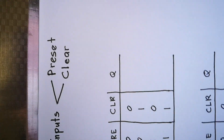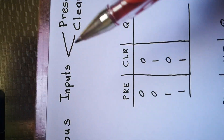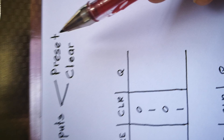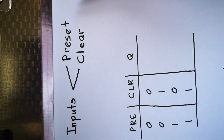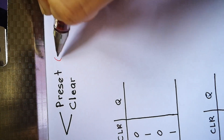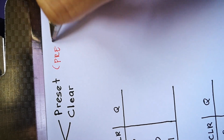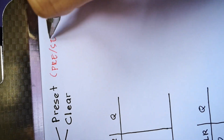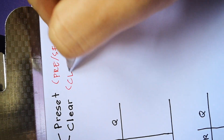We have two kinds of asynchronous inputs. We call them preset and clear. For preset, it is also known as PRE or SET, and clear is CLR.